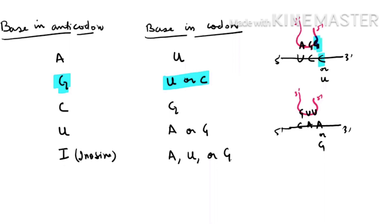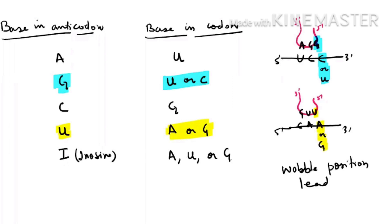If in the codon A is substituted with G — a substitution in messenger RNA — one base of the anticodon U can still read it. As a result, this leads to a silent mutation. So the wobble position — the third position — leads to silent mutation.